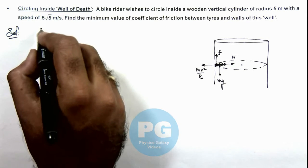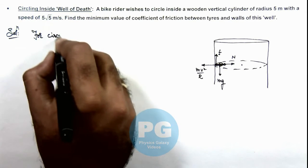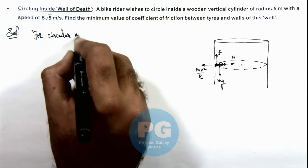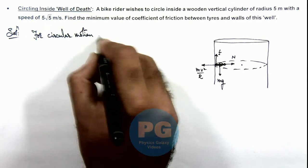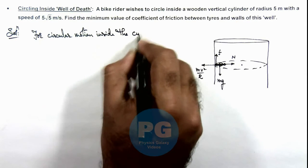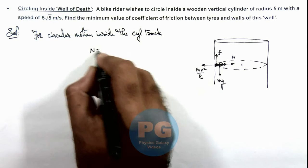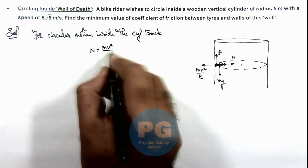So in this situation we can write for circular motion inside the cylindrical track. Here we can write the normal reaction is equal to m v square by r.